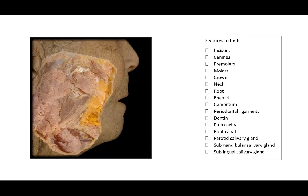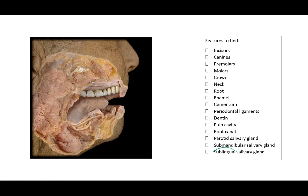In this image, we can see the parotid salivary gland located by the ramus of the mandible, just by the masseter muscle. We can see the submandibular salivary gland. And in this cutaway view, we can also see the sublingual salivary gland.